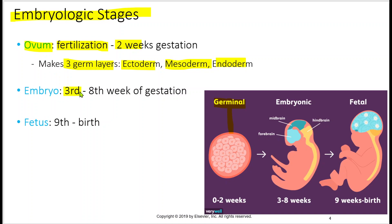From the third week all the way to the eighth week we call it an embryo — the embryonic stage. Then from the ninth week to birth, that's when we call it a fetus, the fetal stage. You need to know these stages and the corresponding week ranges, and recognize them related to pictures as well.